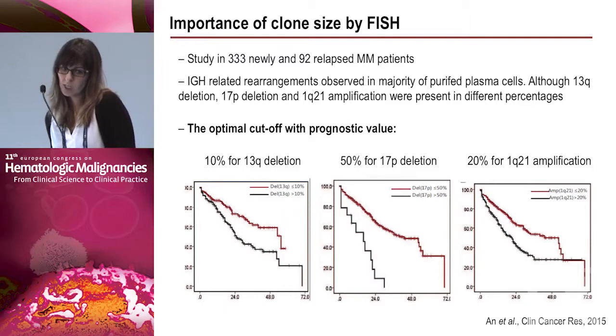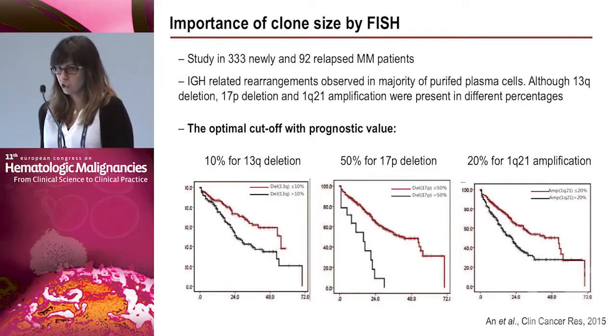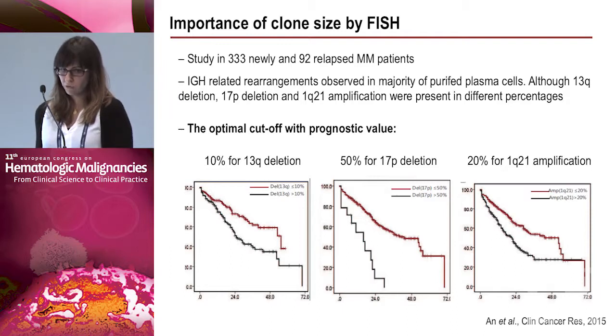High-risk cases also include patients with high-risk gene expression profiling signatures, which I will discuss later. An important study published last year in Clinical Cancer Research examined clone size detected by FISH in more than 300 newly diagnosed patients and 92 relapsed multiple myeloma cases. They observed that IGH-related rearrangements were present in the majority of purified plasma cells, while 13q deletion, 17p deletion, and 1q21 amplification were present in varying percentages.